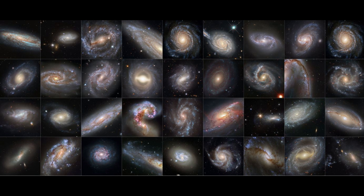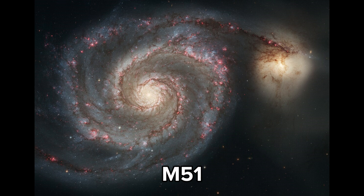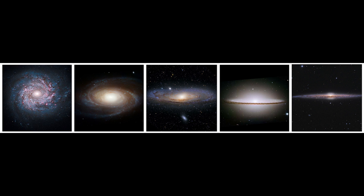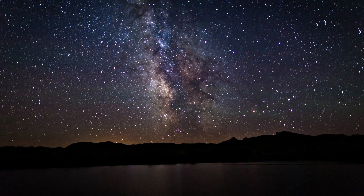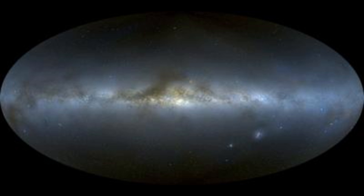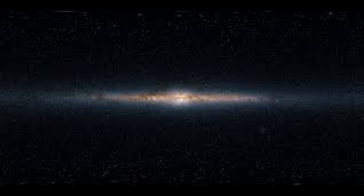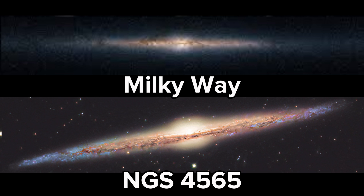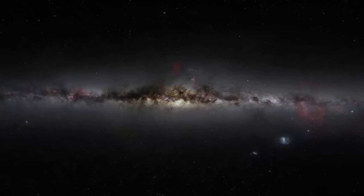We observe spiral galaxies from different angles and perspectives — some, like galaxy M51, are turned to us with the plane of the disk, some at an angle, and some edge-on. A spacecraft in space can make a 360-degree panorama of the entire sky. Comparing such a panorama with galaxy NGC 4565, both galaxies show a flat structure with thickening in the middle, indicating we most likely live inside the disk of a spiral galaxy.